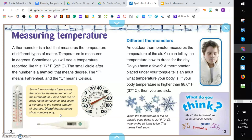Some thermometers have arrows that point to the measurement of that temperature. Some have red or black liquid that rises or falls inside a thin tube to the correct amount of degrees. Digital thermometers show numbers only. When the temperature of the air outside goes down to 32 degrees Fahrenheit, or zero degrees Celsius, water in the air turns to ice. This means it will snow.